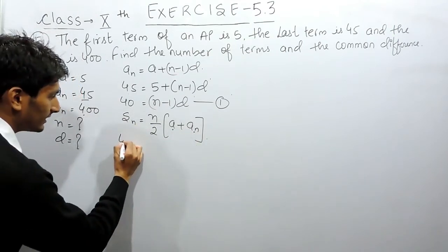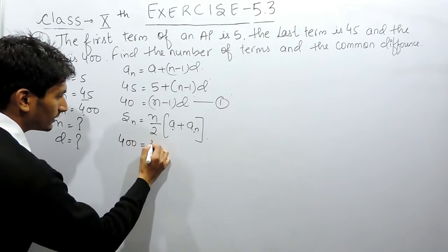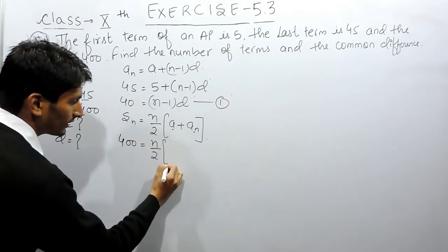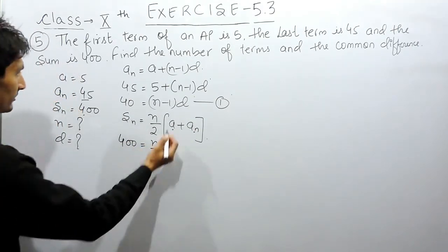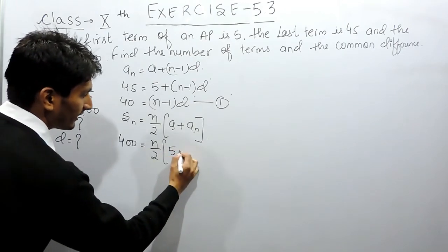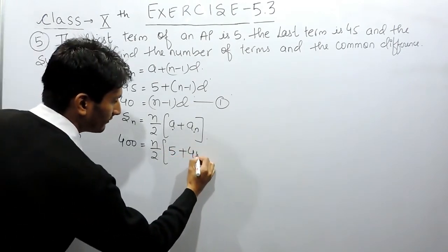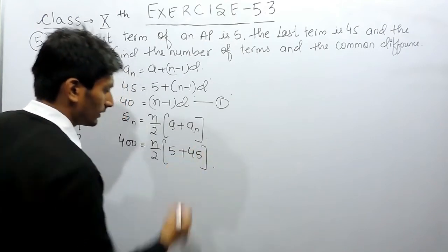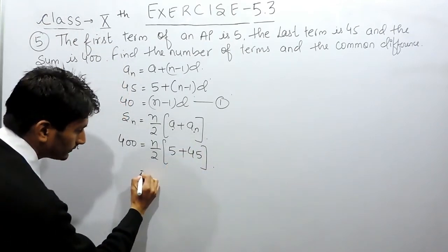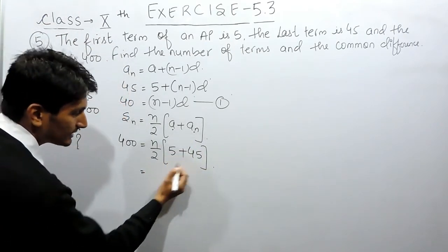The sum here is given as 400, this is equal to n by 2, the number of terms we don't know. But the first term is 5 and the last term is 45. Now if I add this,